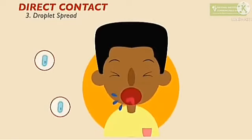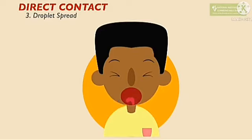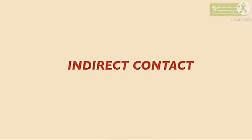Direct contact can also be spread through droplets. When a droplet from an infected person touches an uninfected person, the disease spreads immediately. So this is another way disease can be spread.